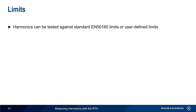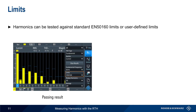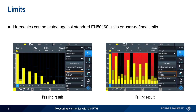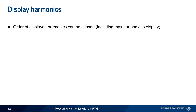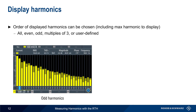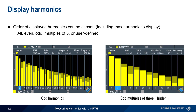One of the most common harmonic measurements is testing against limits, either the standard EN5160 limits or user-defined limits. The per-harmonic limits are shown as blue horizontal lines. For example, this device under test easily passed the EN5160 limit test, whereas this one does not. Violations are shown in red, and an 'L' error indication is displayed as well. The RTH can also be configured to display only certain harmonics or only harmonics up to a certain order — for example, only the odd-order harmonics, or only triplen harmonics, that is, odd harmonics whose orders are multiples of three.